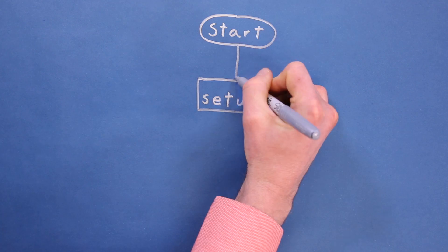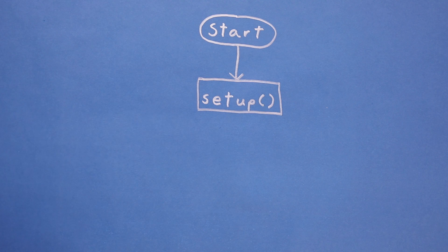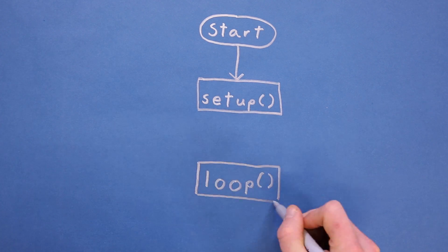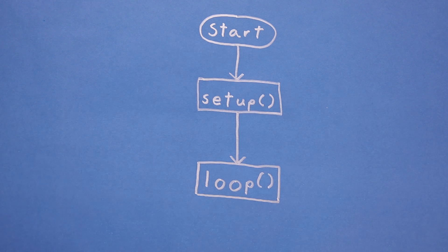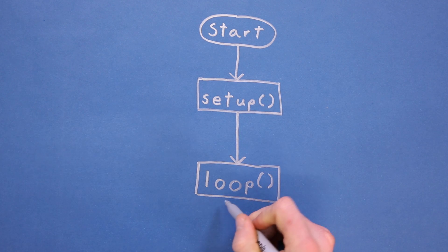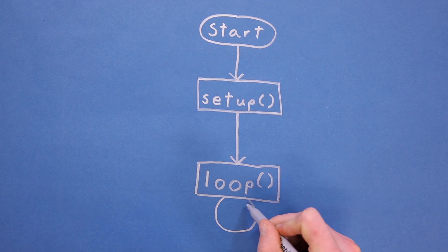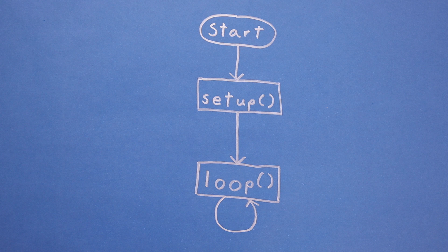Then, the setup function is called once. Whatever we write in there gets executed. After that, the loop function is called, and the code we write in the loop function executes once. The program then calls loop again, so that code is executed again. Notice that there is no exit for this flowchart, because the loop function is just called over and over again forever.